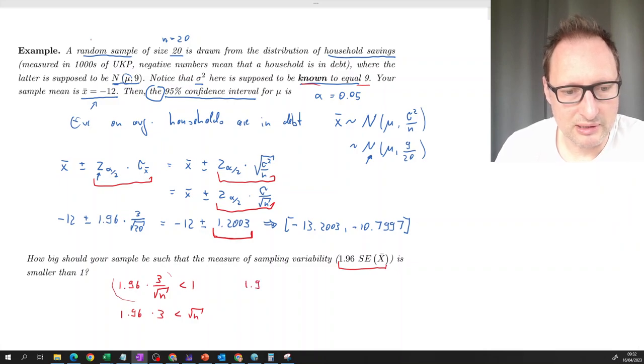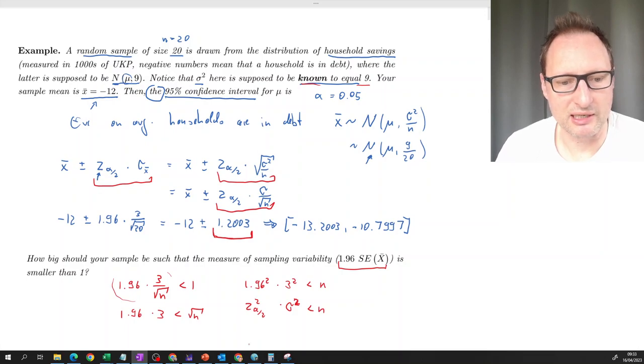So we get 1.96 squared times 3 squared. So n got to be larger than whatever that is. Remember what that 3 is? That 3 is sigma. And that 1.96 is z alpha over 2. So in general, this will be looking like this. n should be larger than the square of the z value times the population variance.